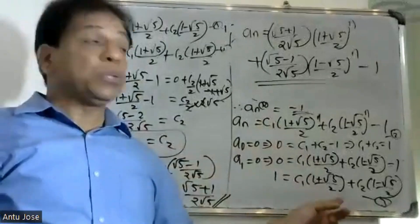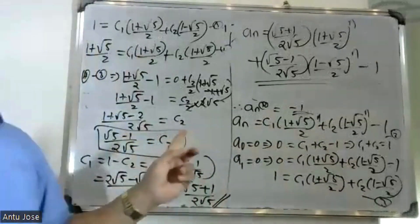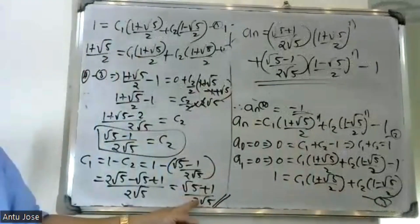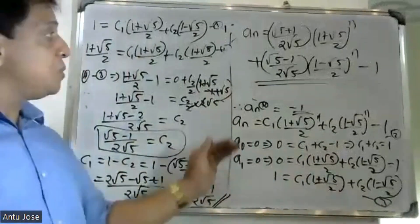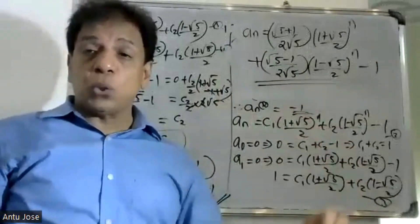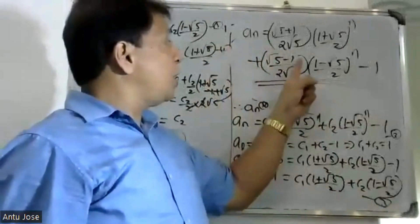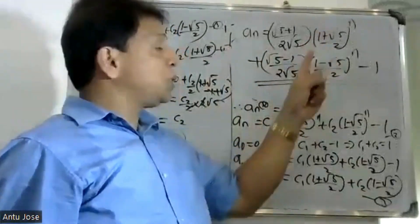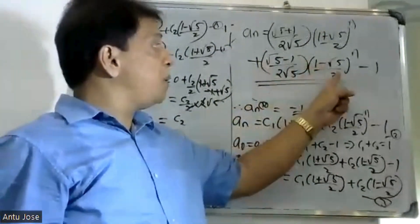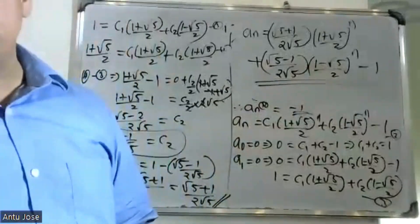From the boundary conditions, C1 equals 1 minus C2, and C1 equals (root 5 plus 1) divided by (2 root 5). Substituting the value, the final solution is: a(n) equals (root 5 plus 1) divided by (2 root 5) times (1 plus root 5 by 2) to the power n, plus (root 5 minus 1) divided by (2 root 5) times (1 minus root 5 by 2) to the power n, minus 1.